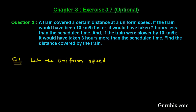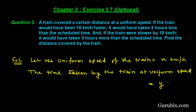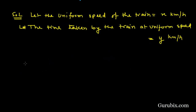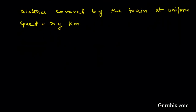First, we shall let the uniform speed of the train equal x km per hour, and the time taken by the train at uniform speed equal y hours. Therefore, the distance covered by the train at uniform speed equals x times y km, because distance equals speed multiplied by time.